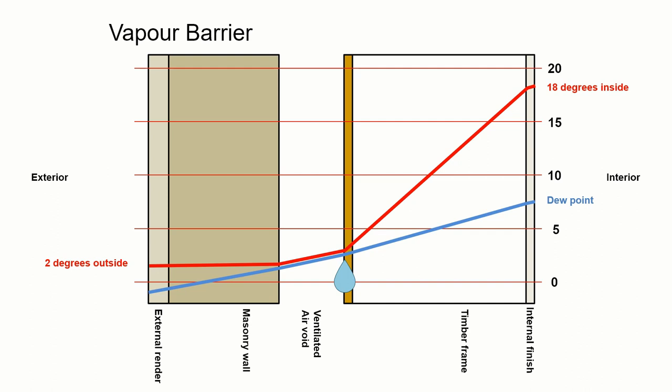As a graphic, we've got our red line which is the temperature difference and the blue line which is the dew point. At the point where the two of them meet, there may be a possibility that water would start to condense. Within the construction, it might be outside of the sheathing and outside of the breather membrane, which would be okay.